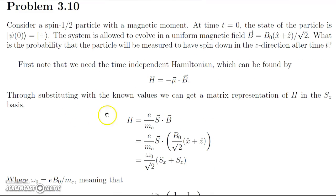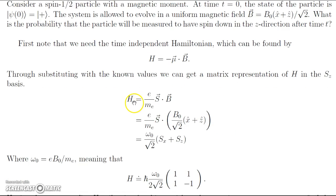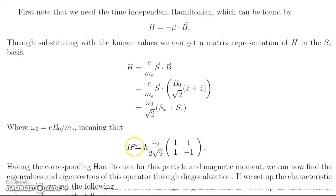Through substituting with known values, we can get a matrix representation of H in the z basis. We have H equal to charge of electron over the mass of electron, times our spin vector, dotted with the magnetic field vector. We substitute in the value given above for the magnetic field, and we get omega_0 over root 2, times the S_x operator plus the S_z operator, where omega_0 is these coefficients as followed.